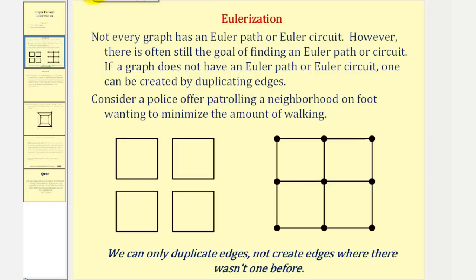If the police officer wants to minimize walking, the officer might want to park their vehicle here, walk down each street exactly once, and return to the vehicle, which means the officer would like to find an Euler circuit for this neighborhood.